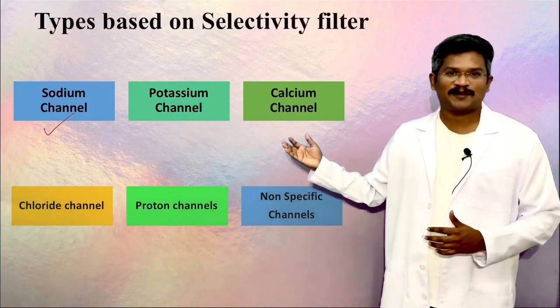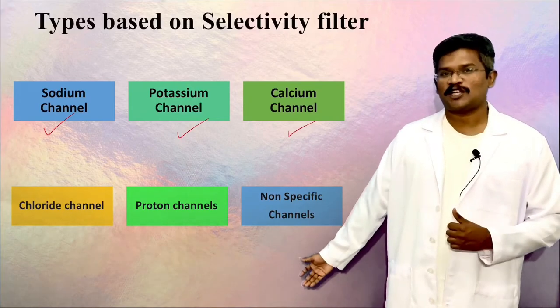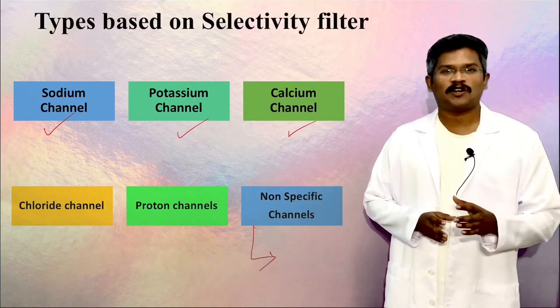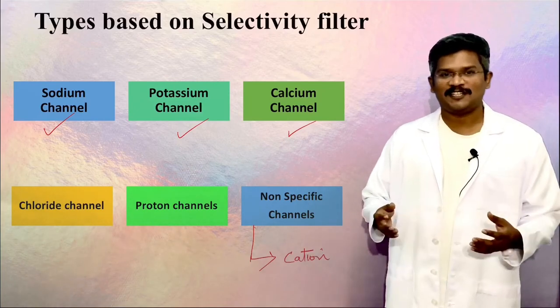...as sodium channel, potassium channel, calcium channel and so on. We call some of them non-specific channels. A channel which allows all the cations is called a non-specific cation channel, and a channel which allows all the ions to pass through is a non-specific anion channel.